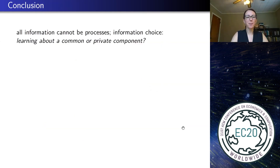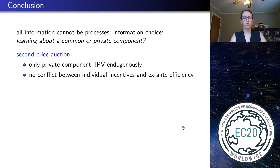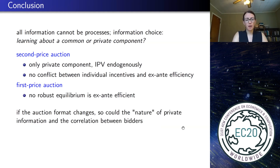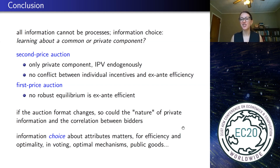Let me sum up. The question was: if there's too much to learn about, what would bidders want to learn — common or private component? The answer in the second price auction is that bidders only learn about their private component in any symmetric equilibrium, and we get IPV endogenously. There are more results in the paper about other auction formats — first price and all-pay auctions. More generally, I think the question of information choice is interesting in a variety of strategic environments such as voting, optimal mechanisms, and public goods — whenever there's more than one thing to learn about, it becomes a strategic decision based on the mechanism what to learn about. Thank you very much.